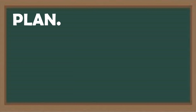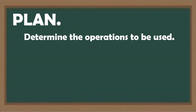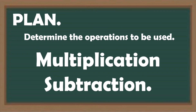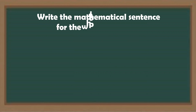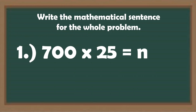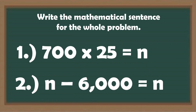Second, we have to plan. Let us determine the operations to be used — we have to use multiplication and subtraction. Our mathematical sentences are: 700 × 25 = N, where N is the salary rate per month, and N − 6,000 = N.